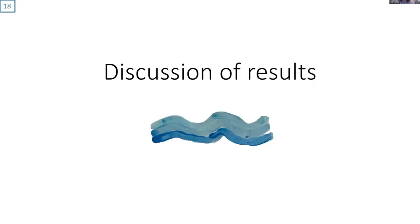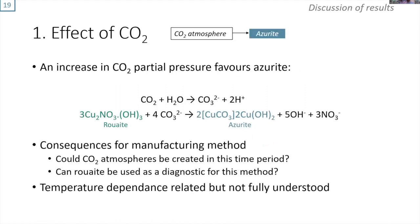Discussing the results. Considering the effect of carbon dioxide. We saw that a CO2 atmosphere favors azurite. This can be explained using Le Chatelier. If you have carbon dioxide dissolved, it makes carbonate ions, and those need to react with the ruite to form azurite. So if you have an increase in CO2 partial pressure, that's going to favor the formation of azurite.